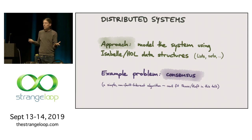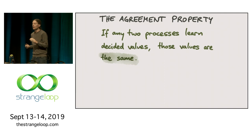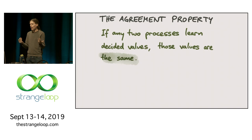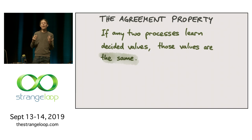This simple consensus algorithm will have the fundamental property that we want consensus algorithms to have. What makes a consensus algorithm correct is, in particular, the agreement property: if you've got two processes in the system trying to reach consensus, then at some point those processes learn or decide a value. And if any two processes have decided a value, then those values must be the same — that is, they agree on the value that they have decided.